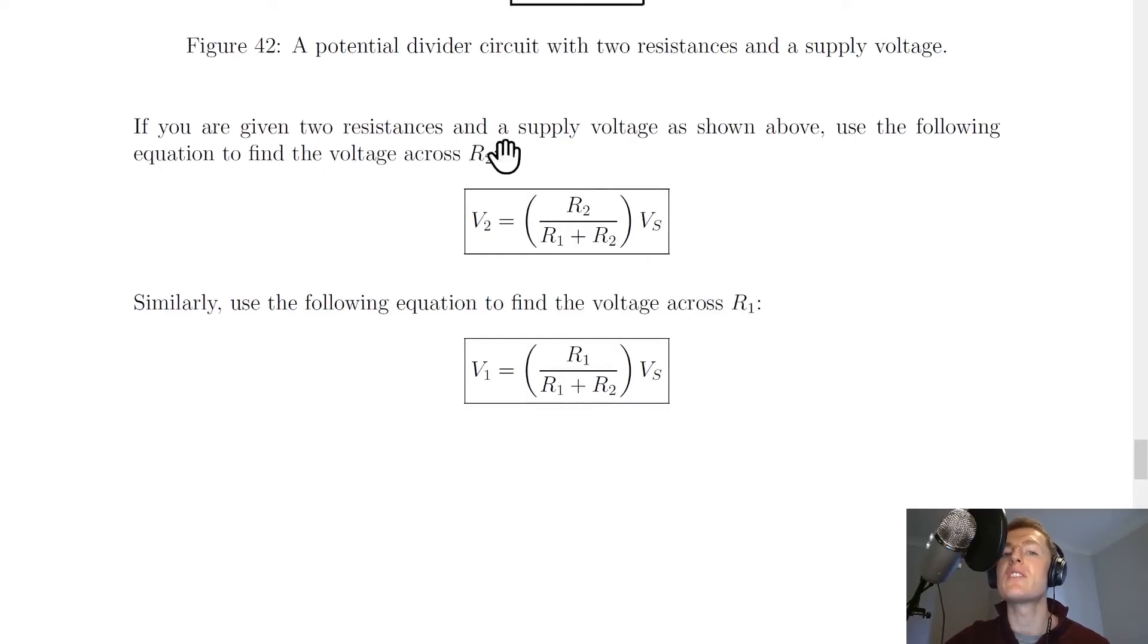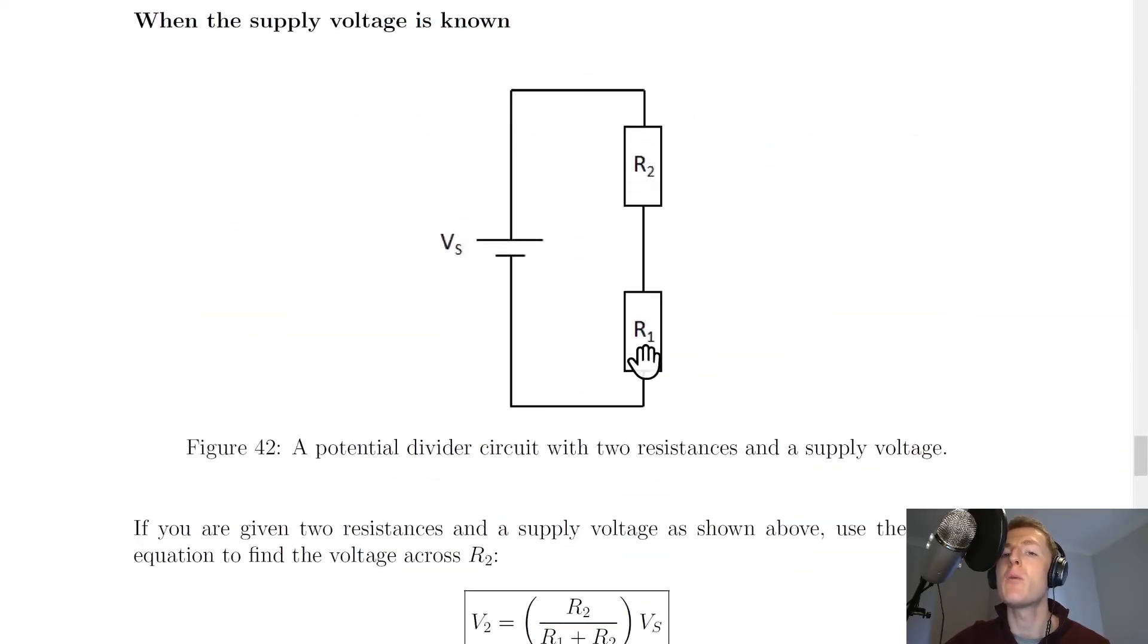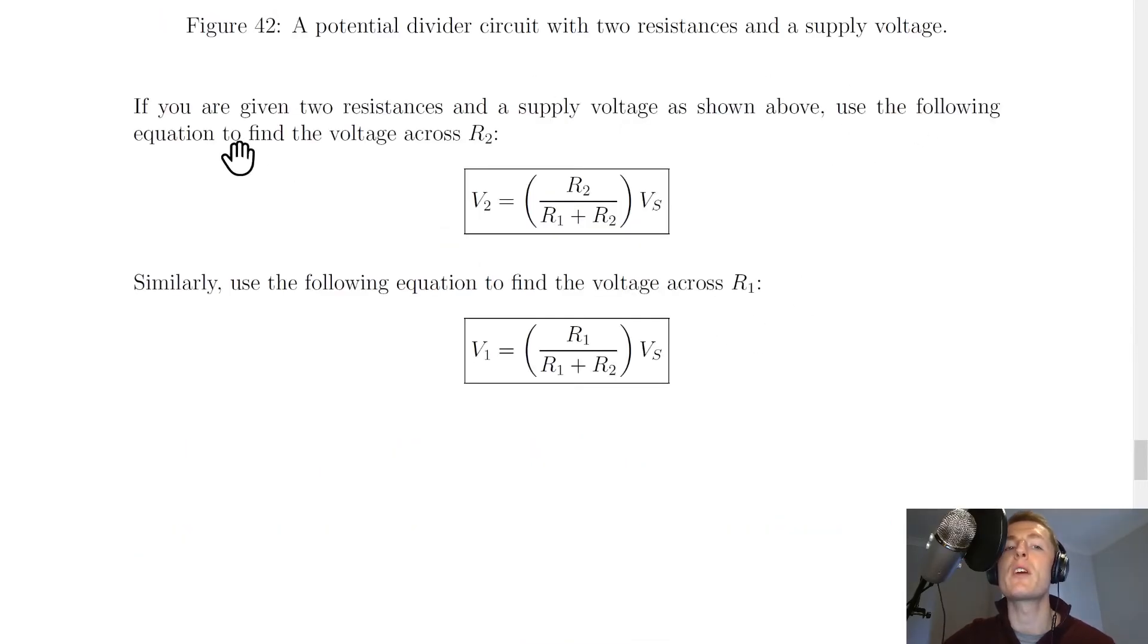If you're given two resistances and a supply voltage as shown above, so there's my R1, R2 and VS, then we can use the following equation to find the voltage across resistor R2. So V2 equals R2 over R1 plus R2 times VS. And this is essentially a ratio of resistances. But notice that similarly we can use the following equation to find the voltage across R1. So this voltage we would call V1 and this equals R1 over R1 plus R2 times VS. Notice how the numerator is different to correspond to the voltage that we're trying to find. If you're trying to find voltage V2, you use R2 on the top. And if you're trying to find voltage V1, you use R1 on the top. So this is our first potential divider equation.